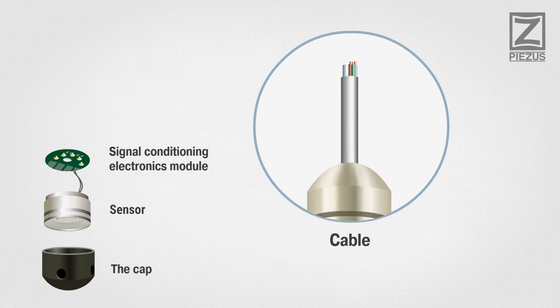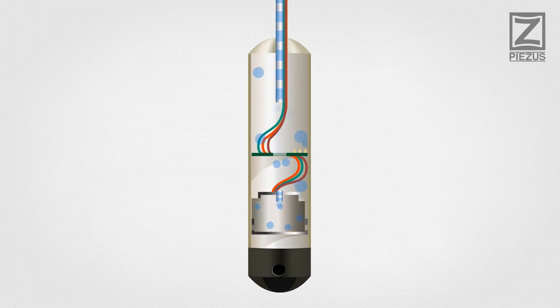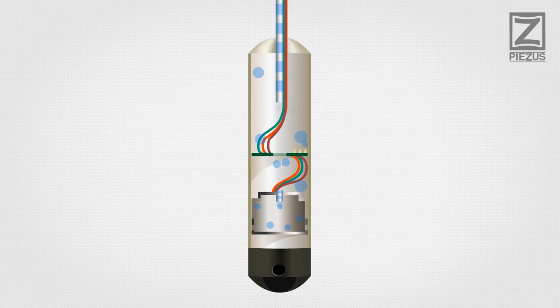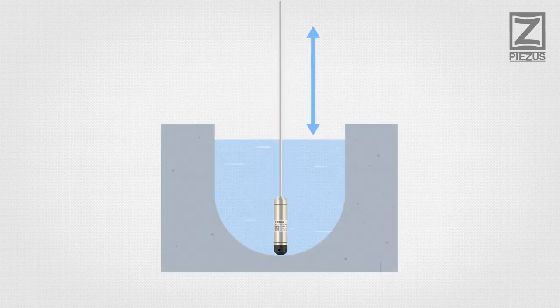The capillary tube delivers atmospheric pressure to the backside of the sensor element's diaphragm to compensate for possible fluctuations in the atmospheric pressure.